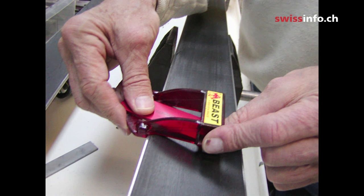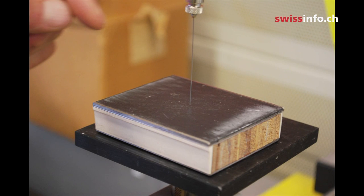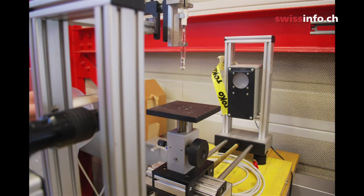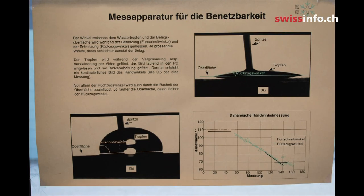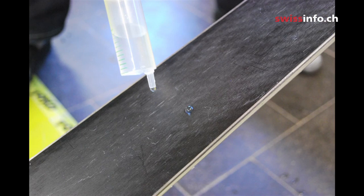If you have a big roughness, you will have a lower contact area. If you have really little roughness, you have a higher contact area. Out of this needle, the water comes out — you build up a drop. Here there is a video camera, and if the water drop is like a ball, then we have a good base.